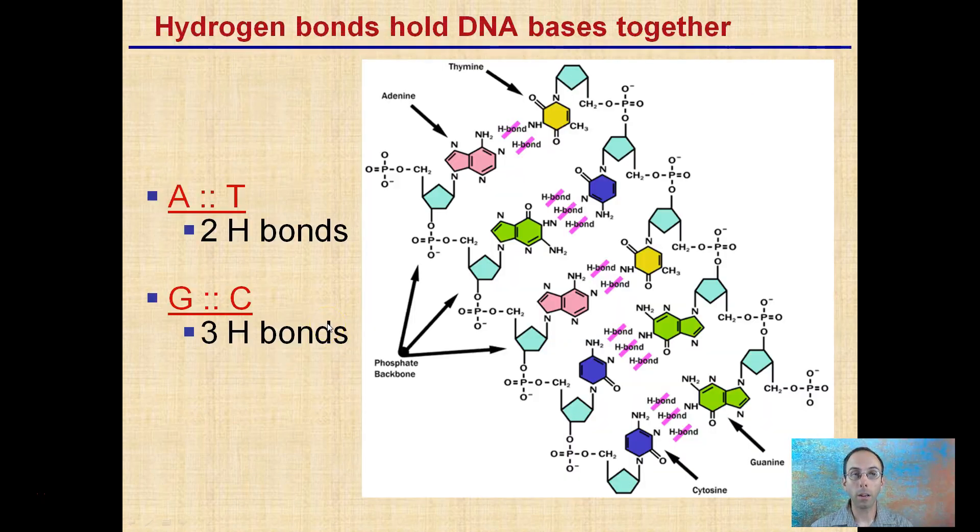We see that depicted here. These hydrogen bonds hold the bases together. Where there's a thiamine and adenine, we see two bonds. Where there's a cytosine and guanine, we see three bonds. Keep in mind, we can identify this as DNA because of the presence of thiamine.